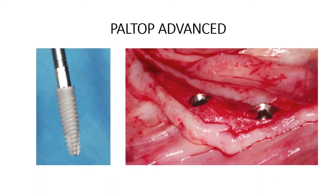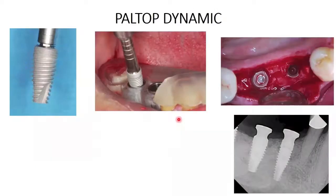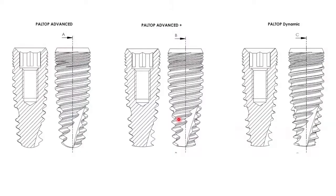There are three different types of implants: the Paltop Advanced Implant, the Advanced Plus Implant, and the Dynamic Implant. They all kind of look the same — I flipped through the pictures quickly — but these are the three different implants. So here are the differences and why I might select one versus the other.